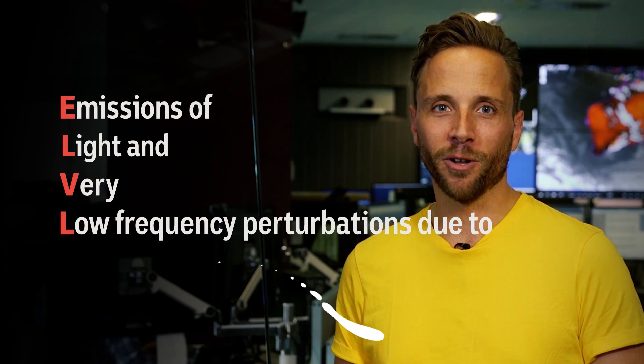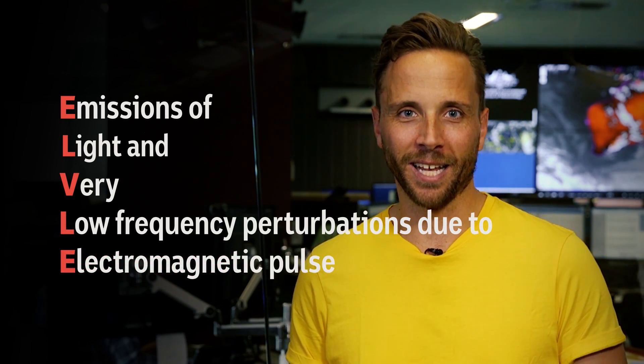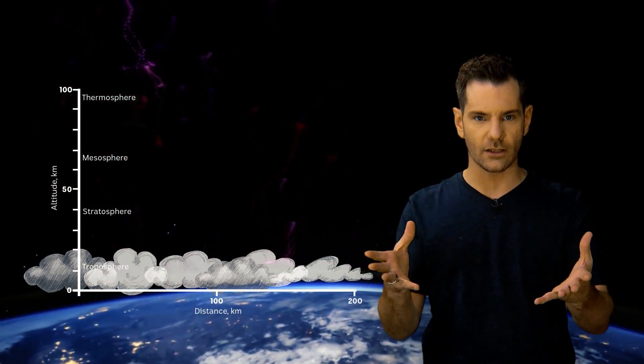Elves stands for emissions of light and very low frequency perturbations due to electromagnetic pulse sources. Elves start out as a flash of light that ripples out into a flat disk of glowing red-purple light, kind of like a halo or a huge doughnut in the sky.